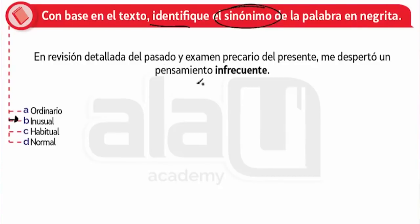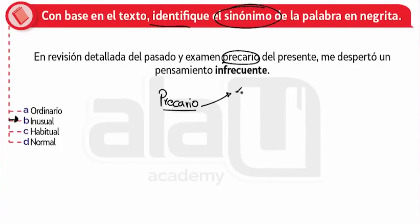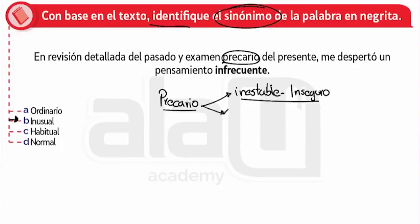En revisión detallada del pasado y examen precario del presente, antes de pasar, el término precario. Vamos a anotar unos cuantos sinónimos de precario. Precario se dice de aquello que tiene escasa estabilidad; por lo tanto sería inestable, sería también inseguro. En su primera acepción se refiere a lo que es efímero, que no permanece constante. Y en la segunda acepción se refiere a limitado.